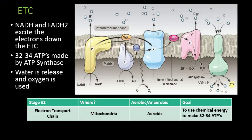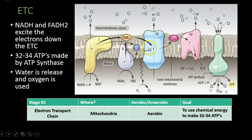You'll notice a couple of differences between the electron transport chain of the mitochondria and that of the thylakoids. The first thing you should notice is there are no green photosystems — we are not collecting light here. The only thing we have to excite these electrons down the electron transport chain are our high-energy electron carriers, NADH and FADH2. So the electrons are going to get excited by the energy put in by NADH and FADH2, and as the electrons move down the chain, hydrogens move through the proteins. We have NADH, FADH2, electrons going down the chain, and then we have ATP synthase.